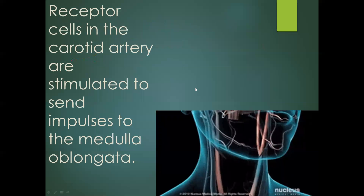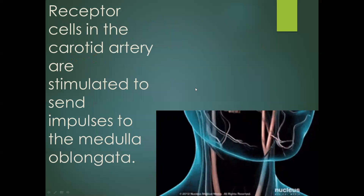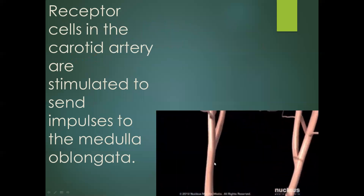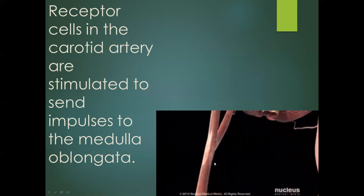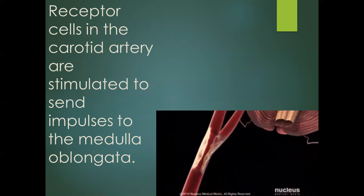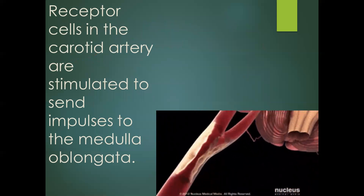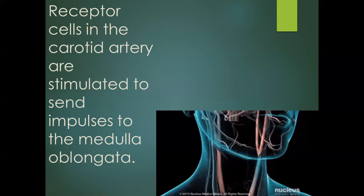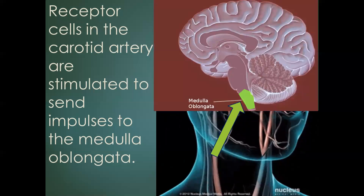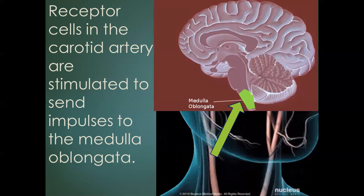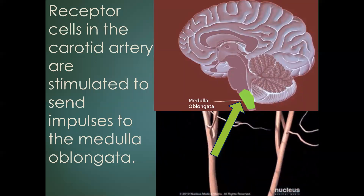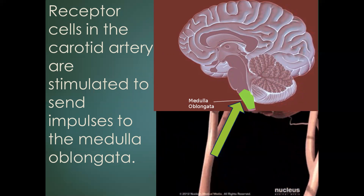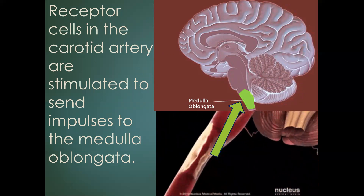Special receptor cells within the neck at the carotid artery pick up this increase in carbon dioxide, and they send electrical impulses to the medulla oblongata of the brain, which is where the spinal cord joins with the brain.